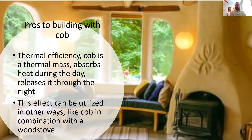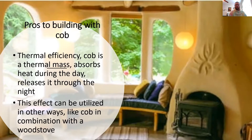An important thing to note is that cob has very little insular value. Cob is a thermal mass, and even though some of these walls can be eight to twelve inches thick, people think that equates to insulation — but cob doesn't insulate any better than concrete or brick. I've read horror stories from people who built with cob in colder climates; you certainly have to use insulation to prevent heat loss through your walls. There were also issues with extreme temperature changes on interior walls creating condensation and moisture problems when these are built improperly.